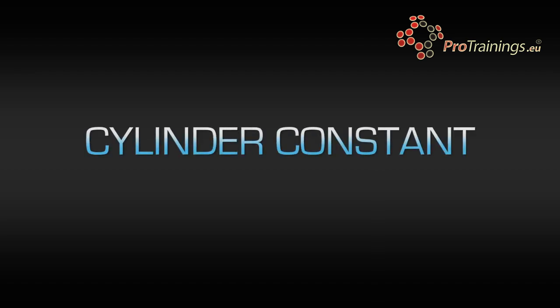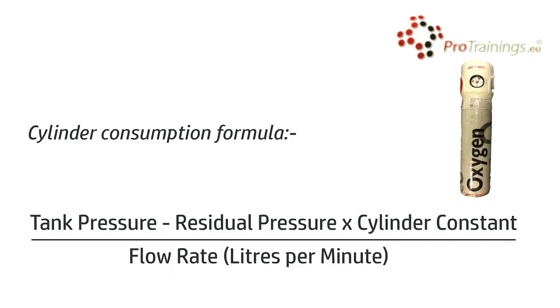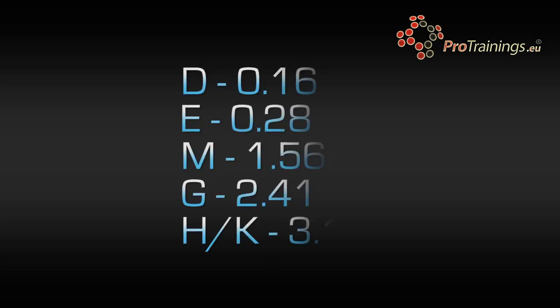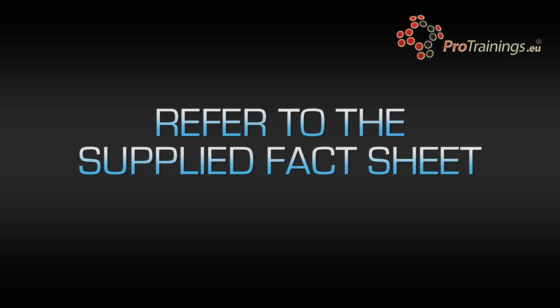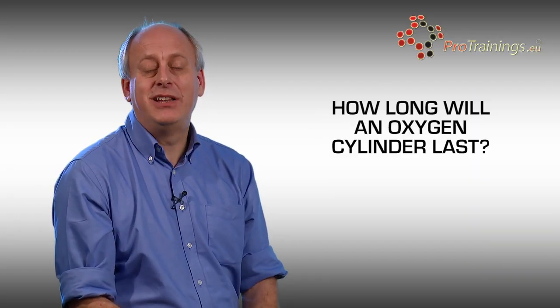The next figure you'll need is a cylinder constant — a figure required to calculate how long the cylinder will last. The constants are: D cylinder = 0.16, E size = 0.28, M size = 1.56, G size = 2.41, and H and K size = 3.14. Do not worry about remembering these — you can refer to the fact sheet in the download area of this course. Use the figure relative to the size cylinder you have.